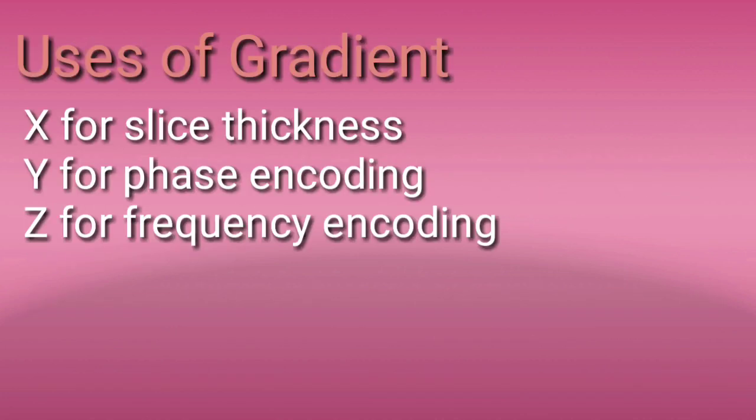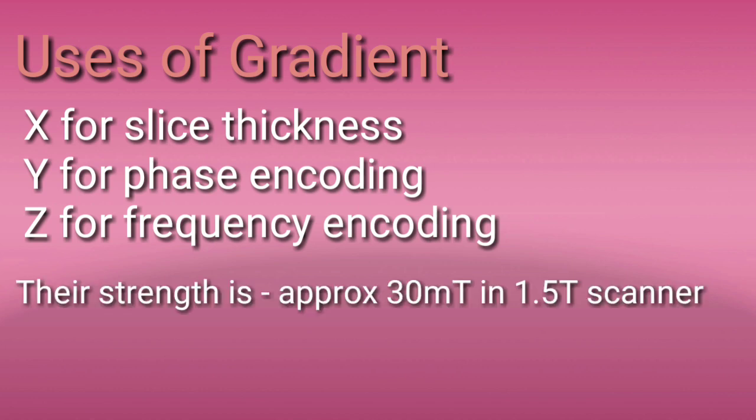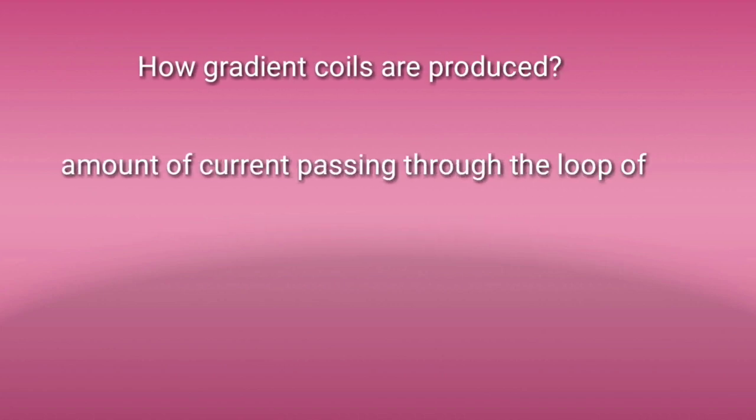The use of each gradient is: X for slice thickness, Y for phase encoding, and Z for frequency encoding. The magnetic field strength of these three gradients is approximately 30 milliTesla in a 1.5 Tesla MRI scanner.